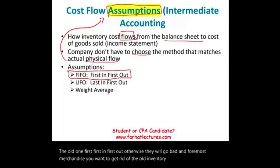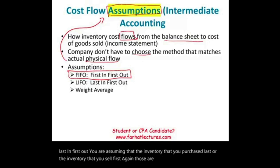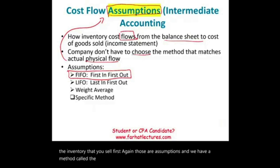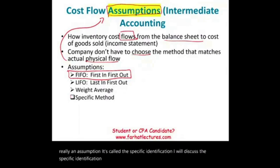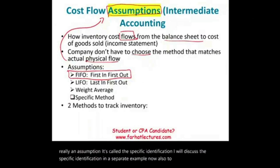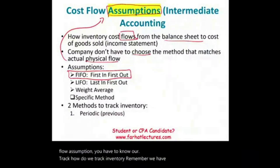LIFO stands for last in, first out — you are assuming that the inventory you purchased last is the inventory you sell first. Again, those are assumptions. We also have a method called the weighted average, and another method called specific identification, which is not really an assumption. I will discuss specific identification in a separate example. Also, to learn about cost flow assumption, you have to know how we track inventory. We have two methods: the periodic method and the perpetual method.